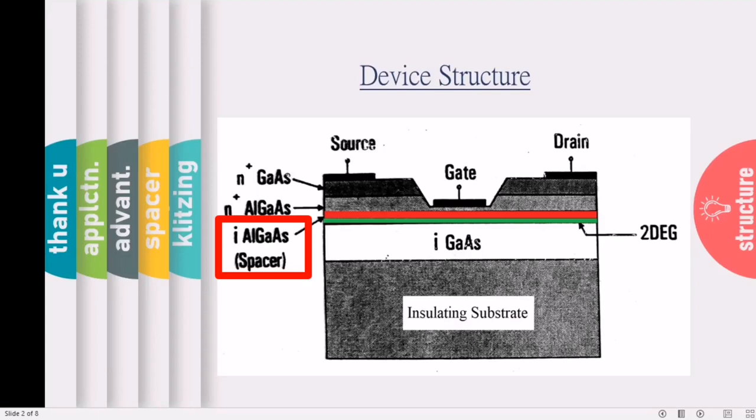The most important characteristics of MODFET are the two-dimensional electron gas that offers the flow of electrons with very high mobility, which is represented as a green-colored layer. The quantum well is formed at the interface due to the larger band gap of AlGaAs as compared to that of gallium arsenide.